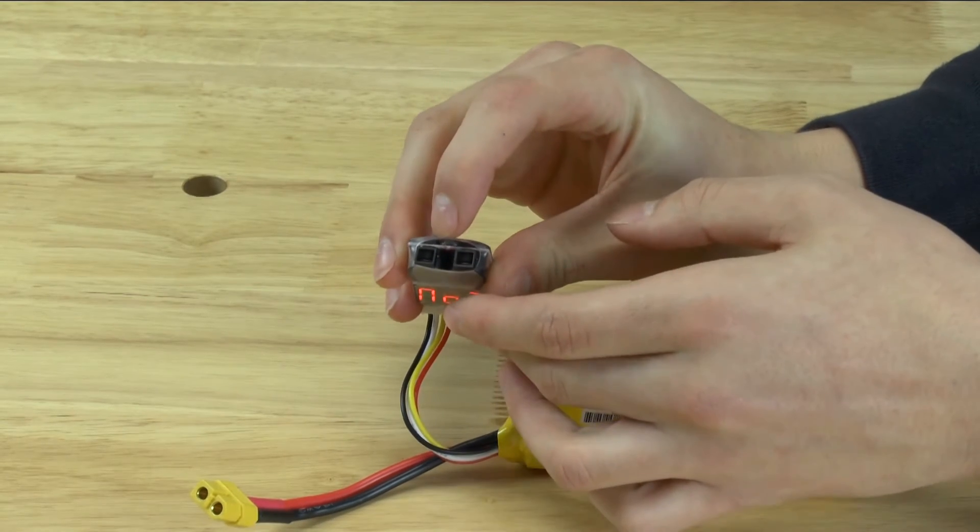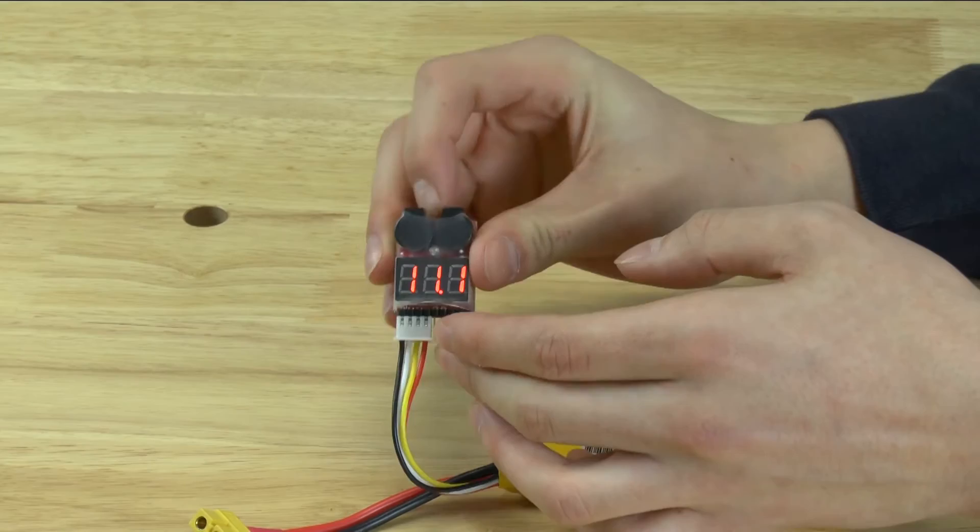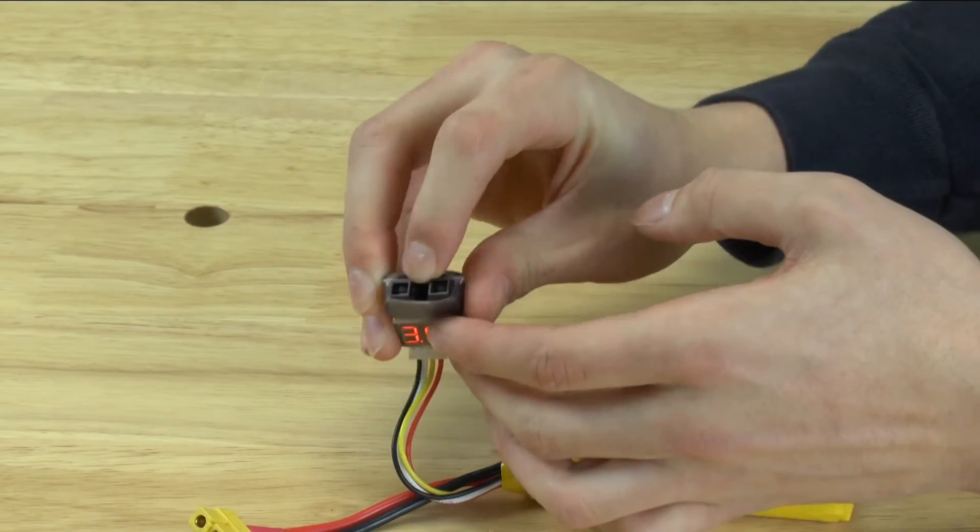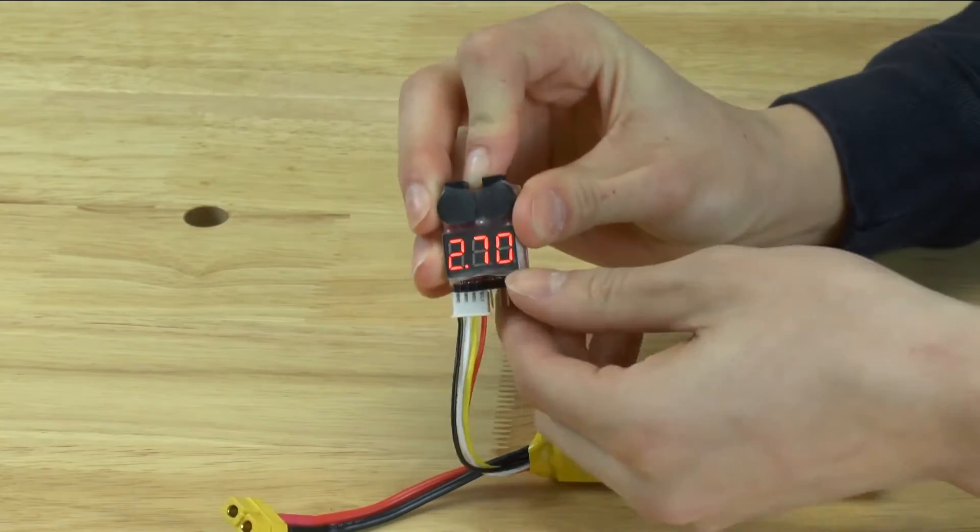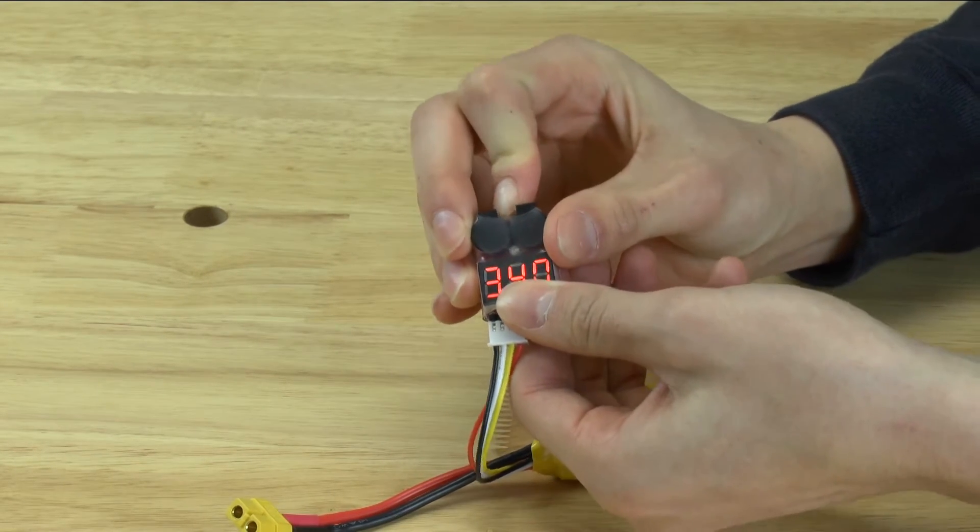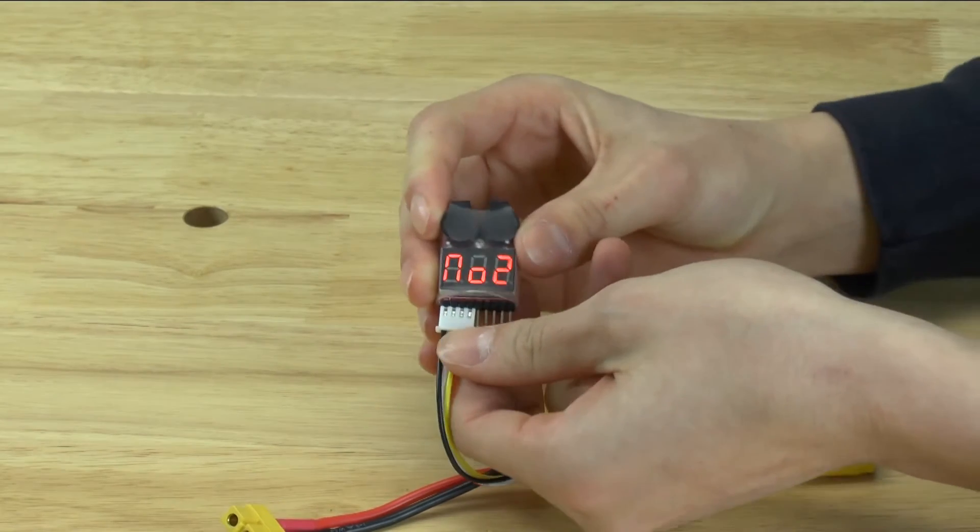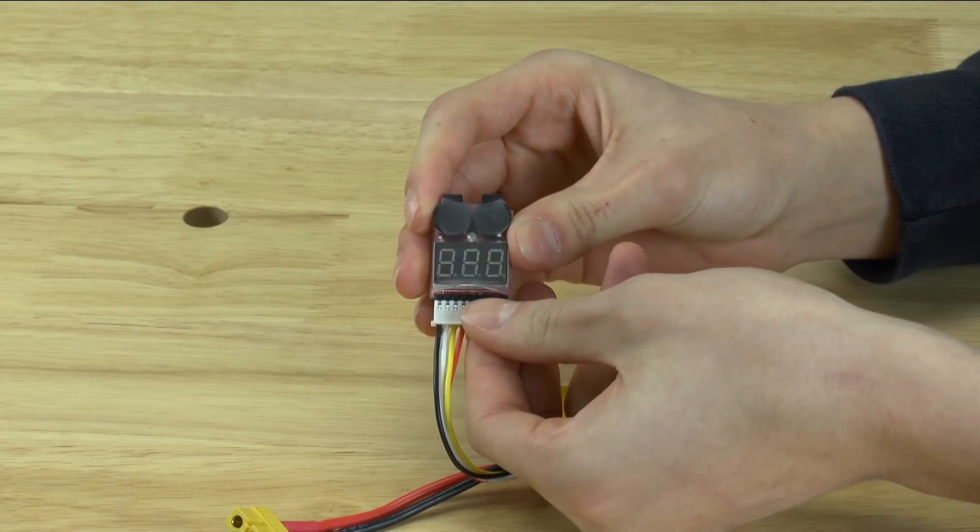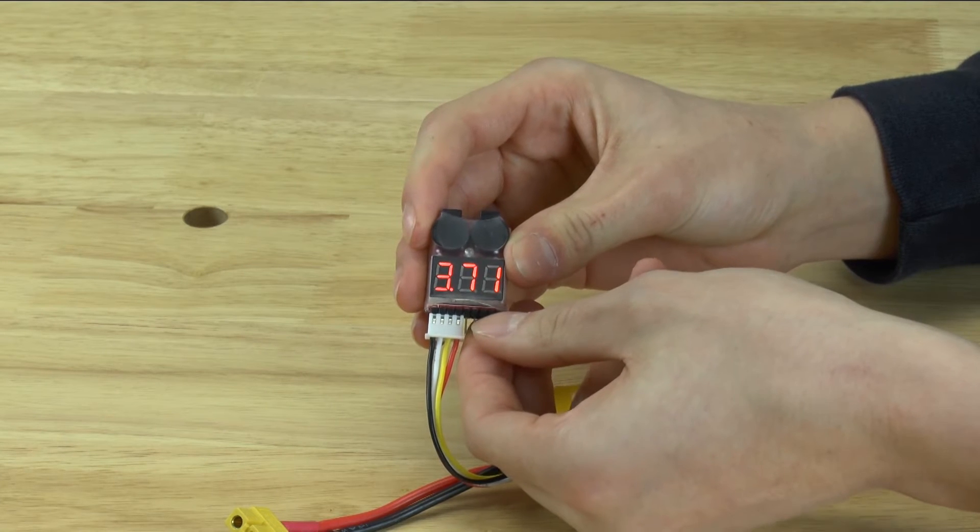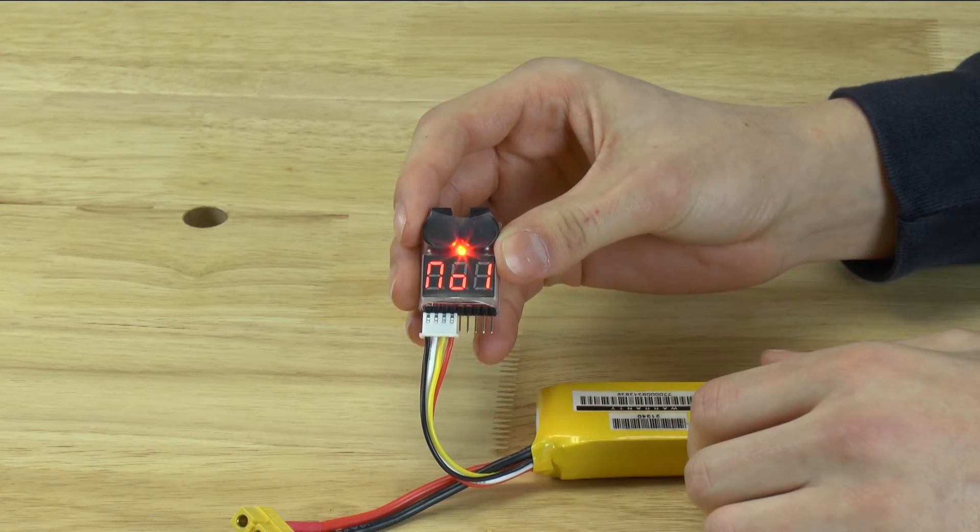Back here, this button allows you to change the minimum voltage before it alerts you. So let me set it to 3.8, and the battery doesn't go above 3.8 so it should alert me. It might take a minute. Yeah, there we go.